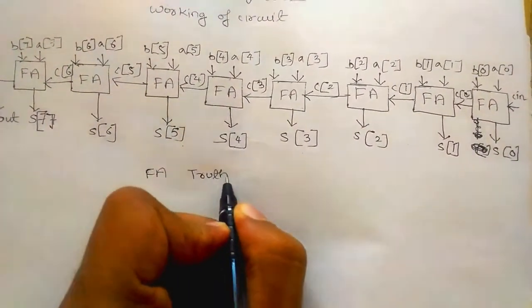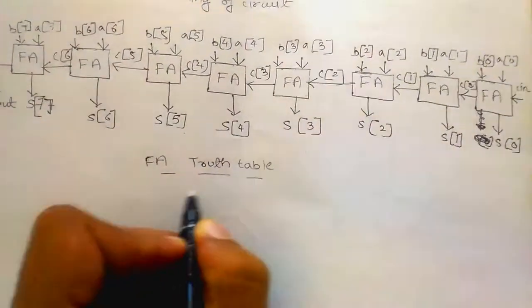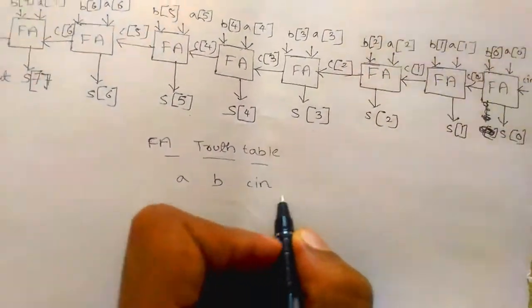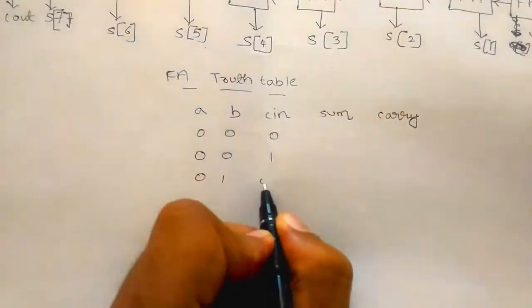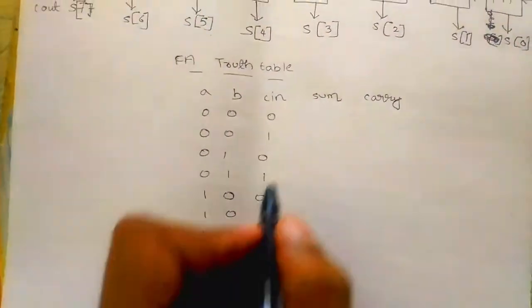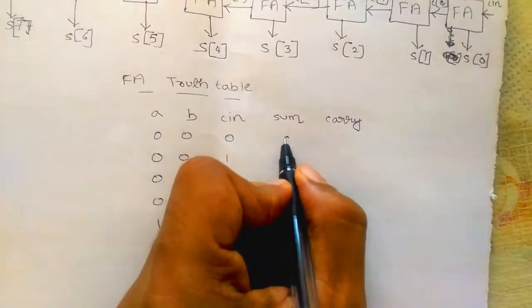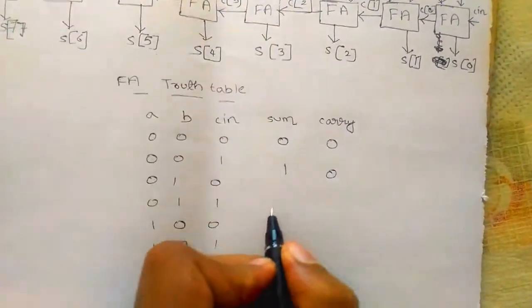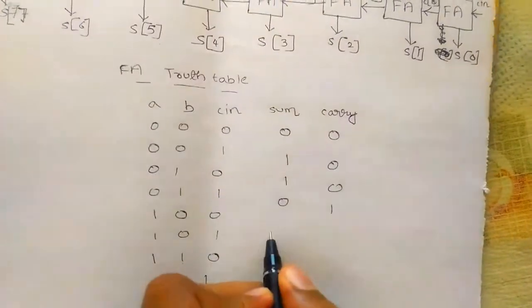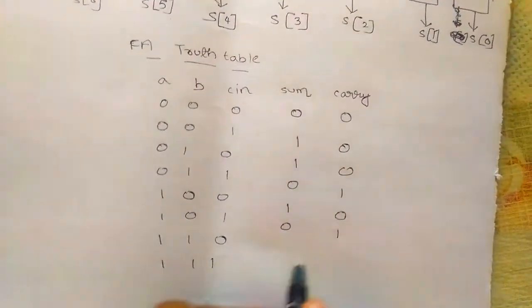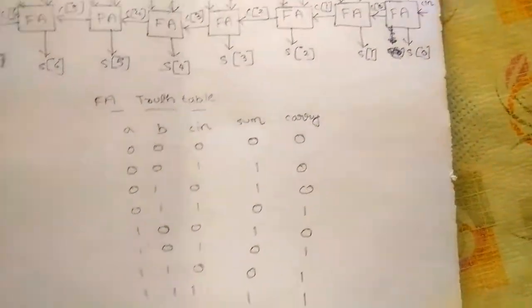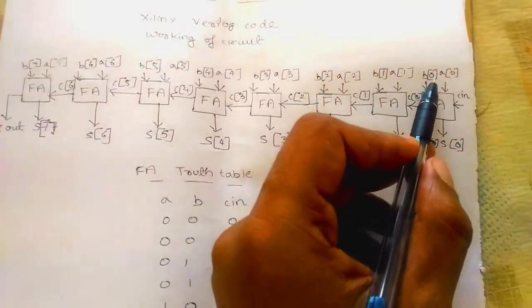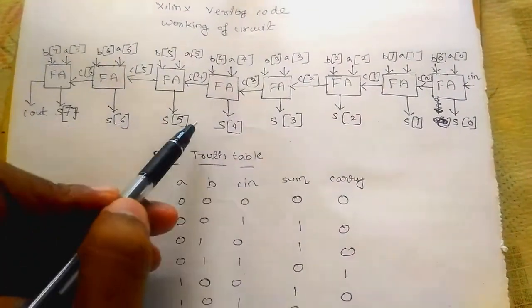For the truth table example: when a=0, b=1, cin=1, we get sum=0, carry=1. Sum=1, carry=0. Sum=0, carry=1. Sum=0, carry=1. Carry=1 and sum also 1. Now how to write the Verilog code for this.